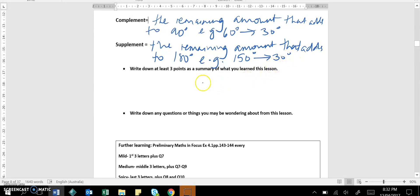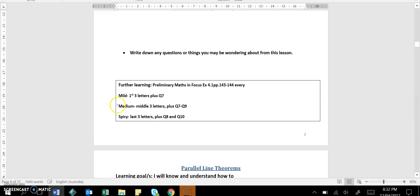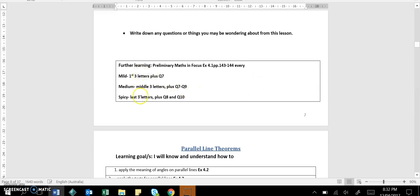So you need to now write down your summary points of what you learned or revised in that section. And then you also need to have a go at exercise 4.1, and you can choose which level you do, but that does need to be done and marked by the time you get back to school. Thanks guys, that's the end of geometry lesson one.